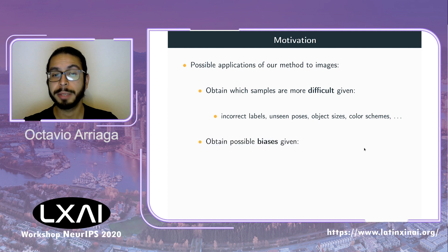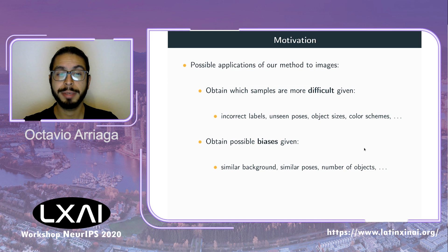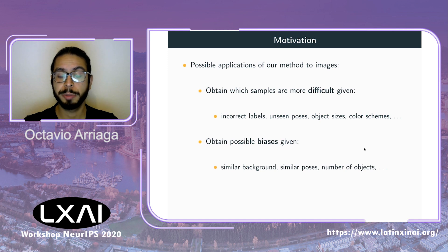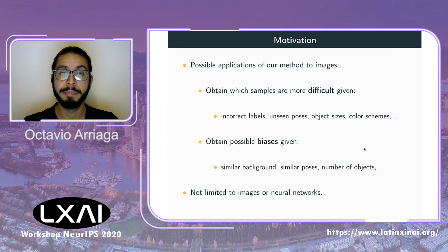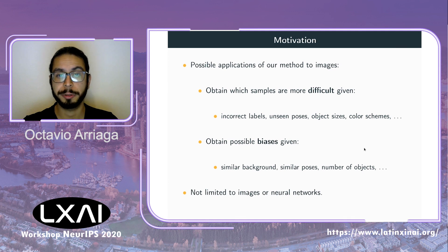Another application is finding possible biases. For example, we might find that a class has very similar backgrounds, and thus when a new image comes with a similar background it would be misclassified. Again, our method is not necessarily limited to images or to neural networks.